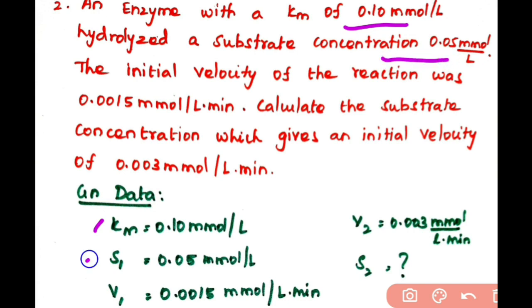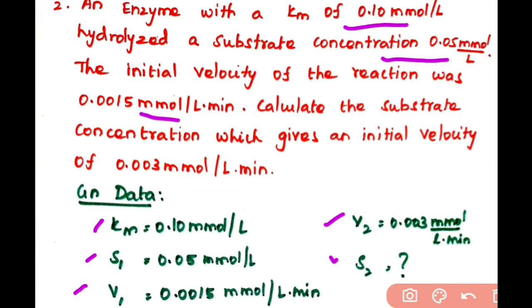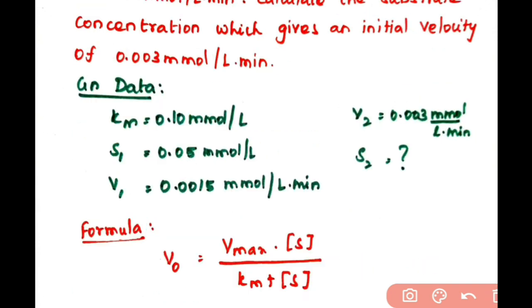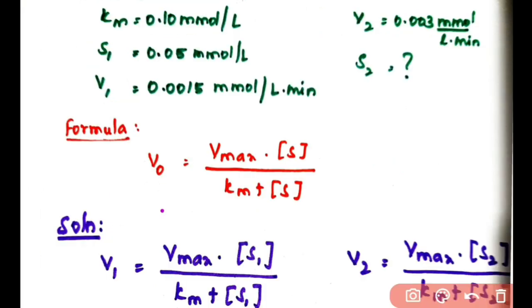Substrate concentration S1 = 0.05 when initial velocity v1 = 0.0015. They are asking for substrate concentration S2 when initial velocity v2 = 0.003 millimolar per liter. So we have v1, S1, v2, and we need to find S2. Using the Michaelis-Menten equation: v0 = (Vmax × S) / (Km + S).